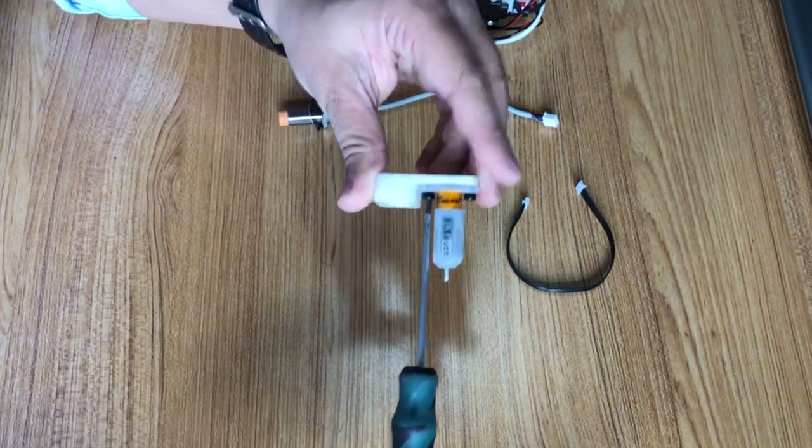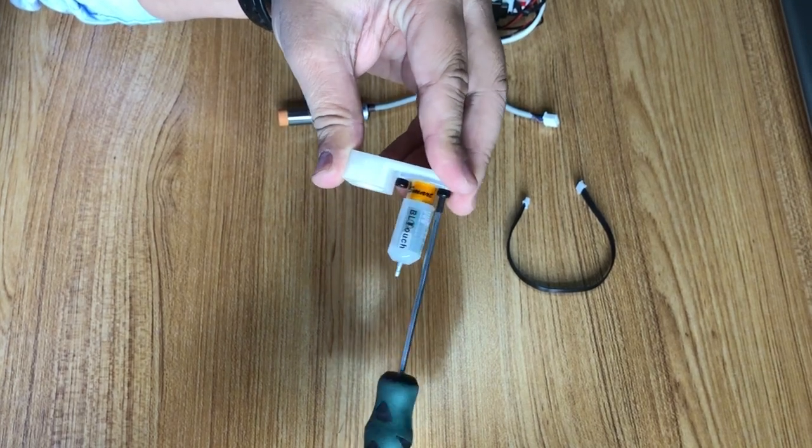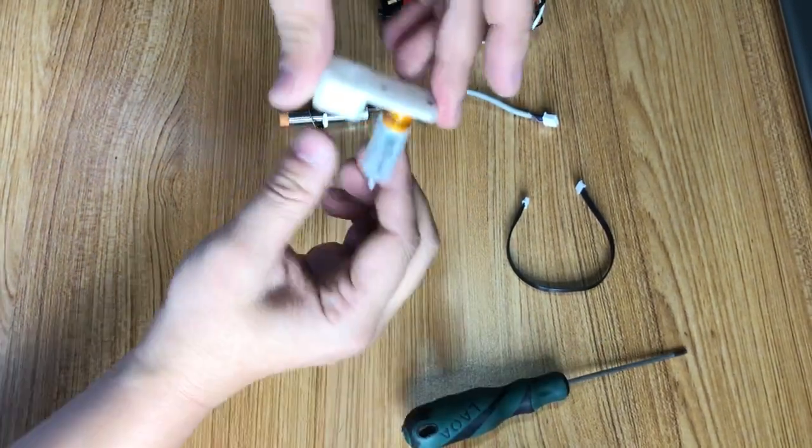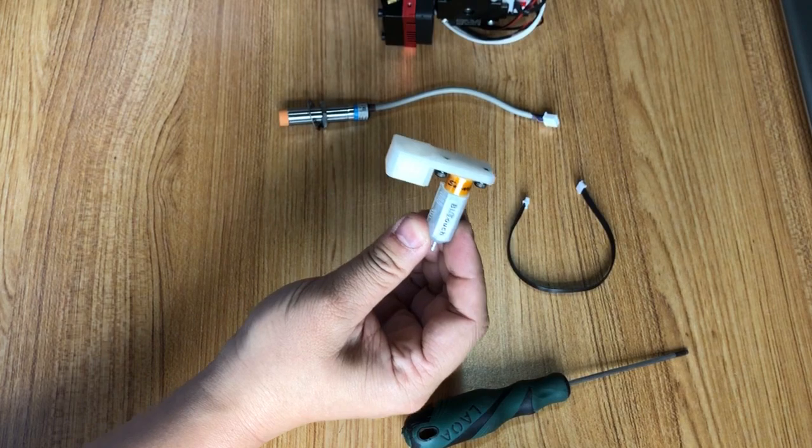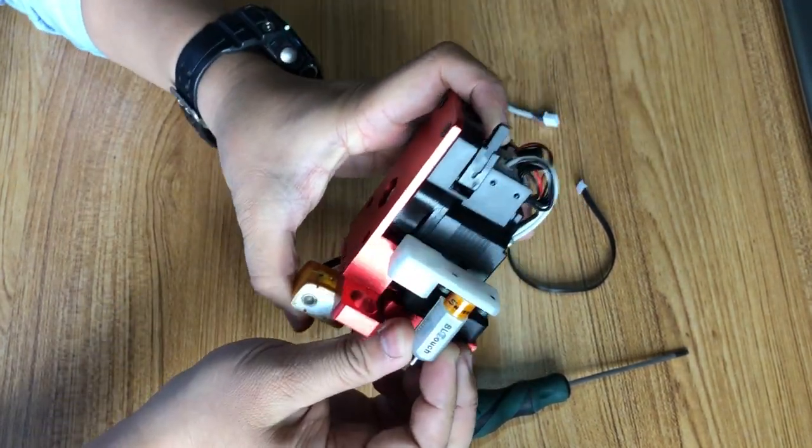This way, the BLTouch will attach to the interchange bar. We will mount this onto the front, the former hole, this way.